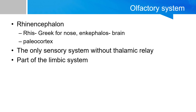The rhinencephalon is part of the paleocortex — 'paleo' meaning old brain. The paleocortex is part of the bigger structure called the allocortex. The allocortex includes both the paleocortex and archicortex. 'Archi' is Greek for early or beginning of the brain, and the archicortex is believed to be earlier than the paleocortex. You can get more information in the neocortical layer video.